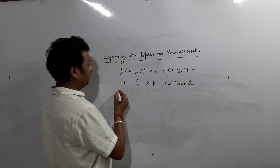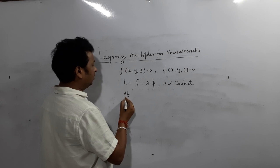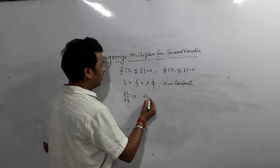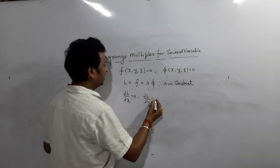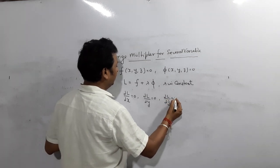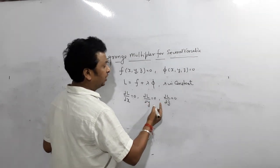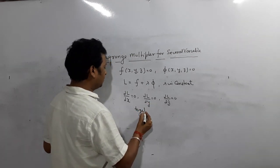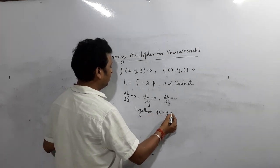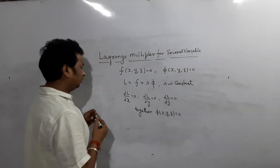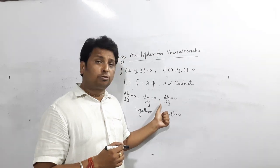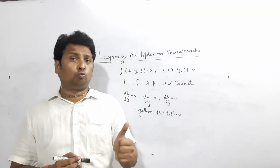Once you have L, find del L over del x equal to zero, find del L over del y equal to zero, del L over del z equal to zero. Solve these three equations together with phi(x, y, z) = 0. Once you solve, you will get the values of x, y, z.